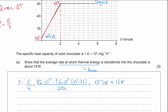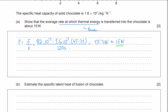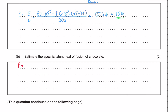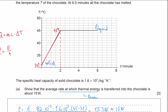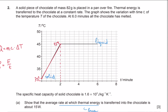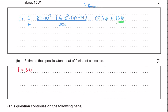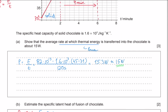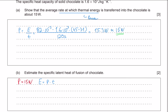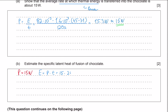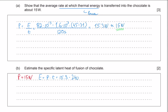Now we know the power of our pan is still 15 watts, since we are still using the same fire and the power output is independent of what is happening to the chocolate. We can see that the phase change started at 2 minutes and ended at 6 minutes, so it lasted 4 minutes, which is 240 seconds. We can calculate the energy supplied to the chocolate during this phase change using energy = power × time, which gives us 15.3 × 240 = 3.67 × 10³ joules.